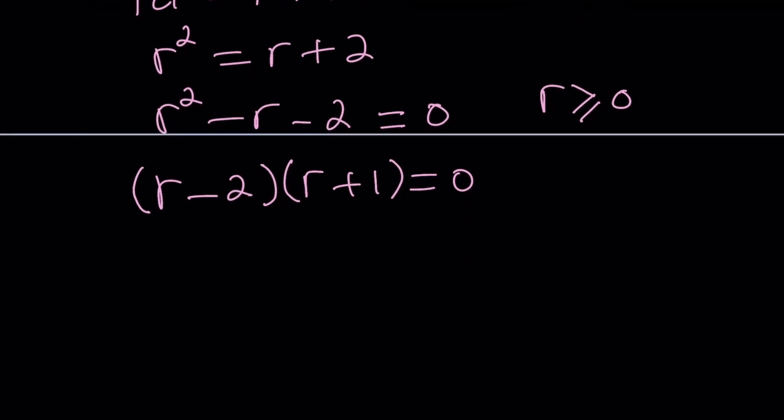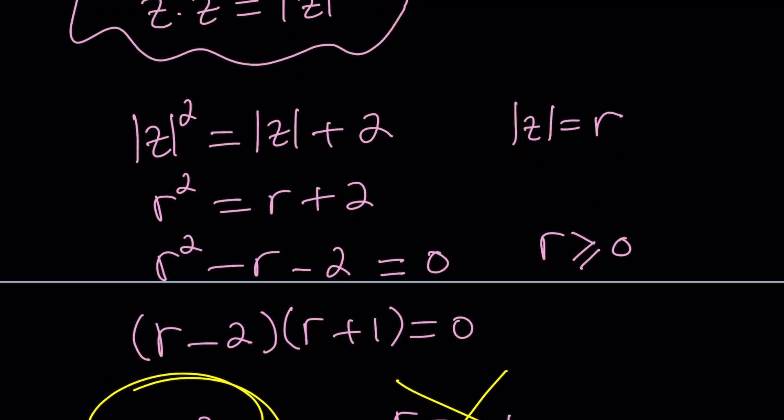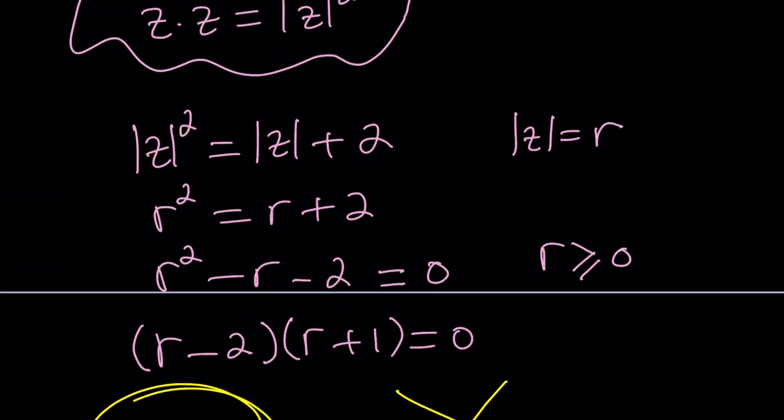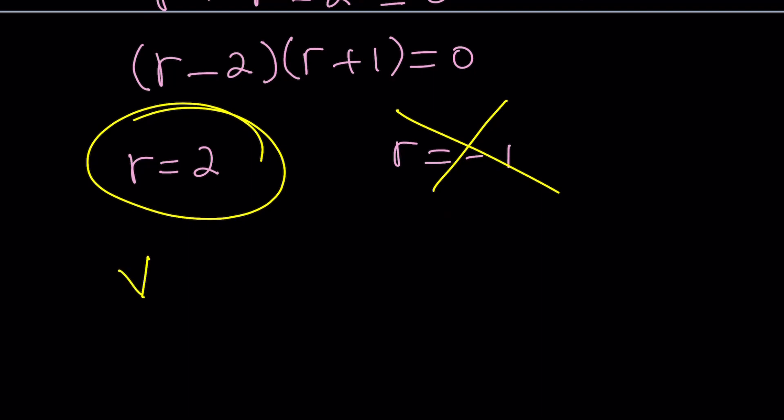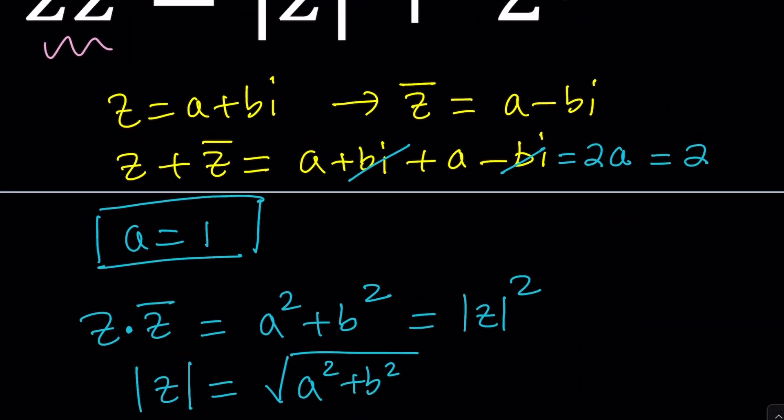So from here we get two results. R is equal to 2 and R is equal to negative 1. But negative 1 is impossible. Therefore we're going to reject it and go with R equals 2. What is that supposed to mean? R is equal to 2. R is the absolute value and the absolute value is the square root of a squared plus b squared. So R is equal to the square root of a squared plus b squared, which is equal to 2.